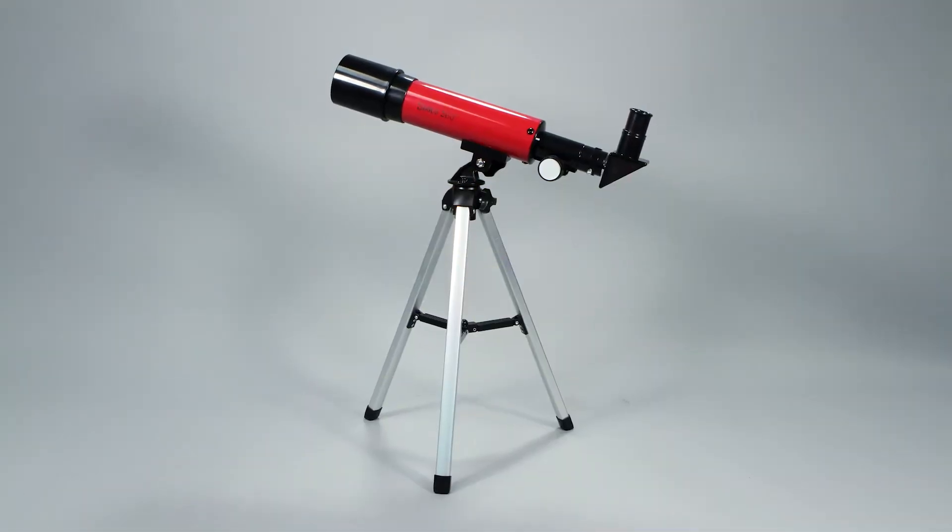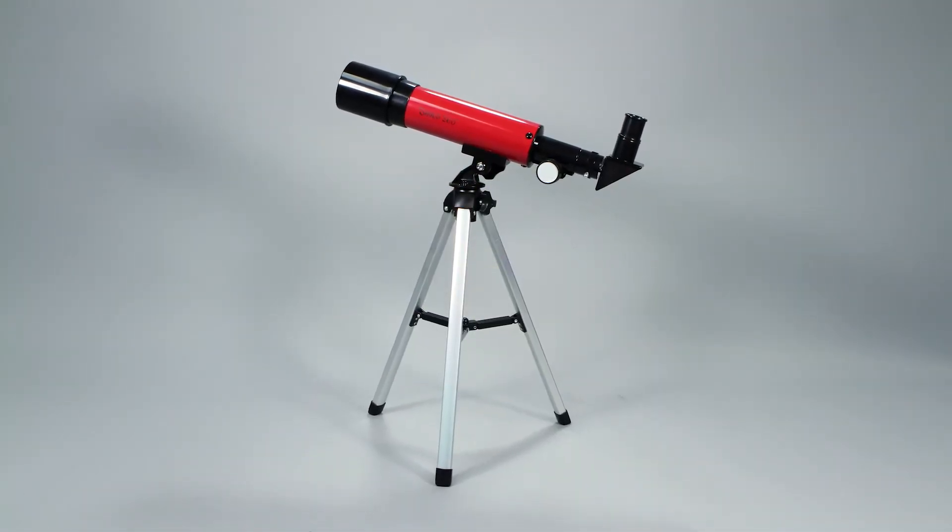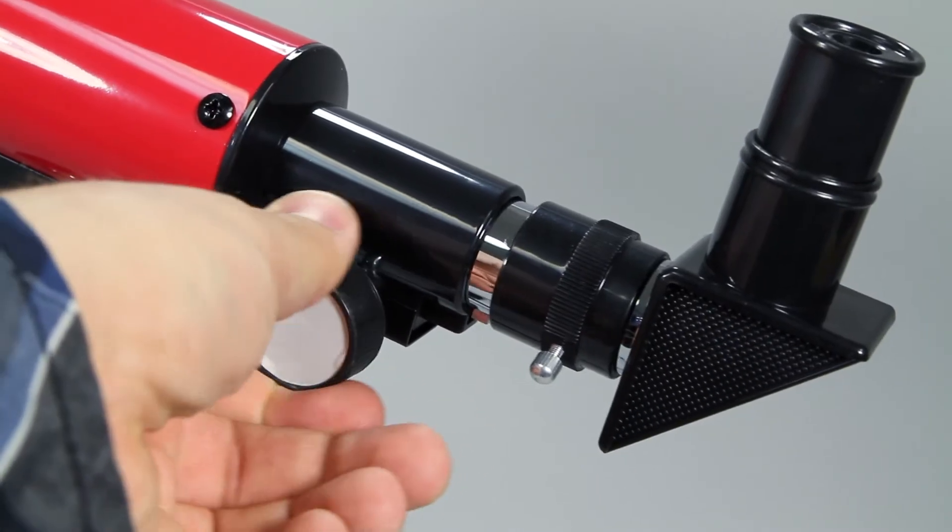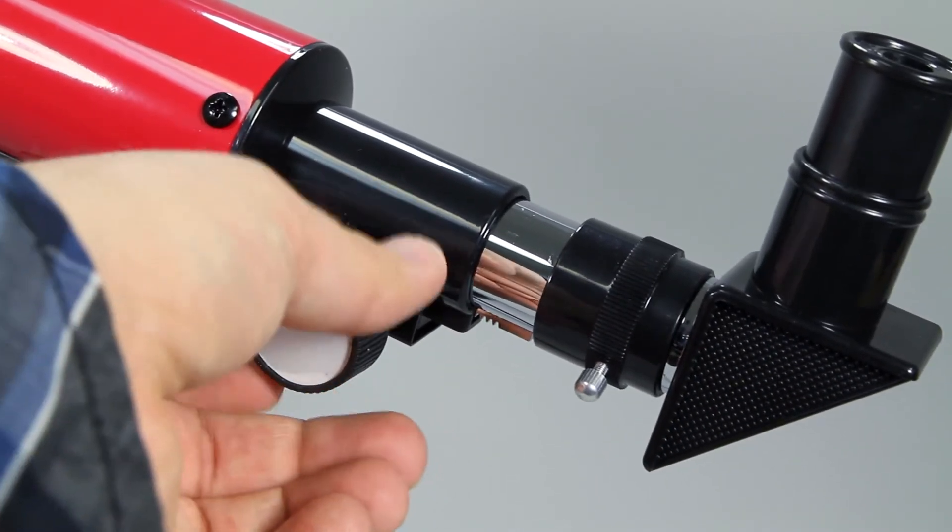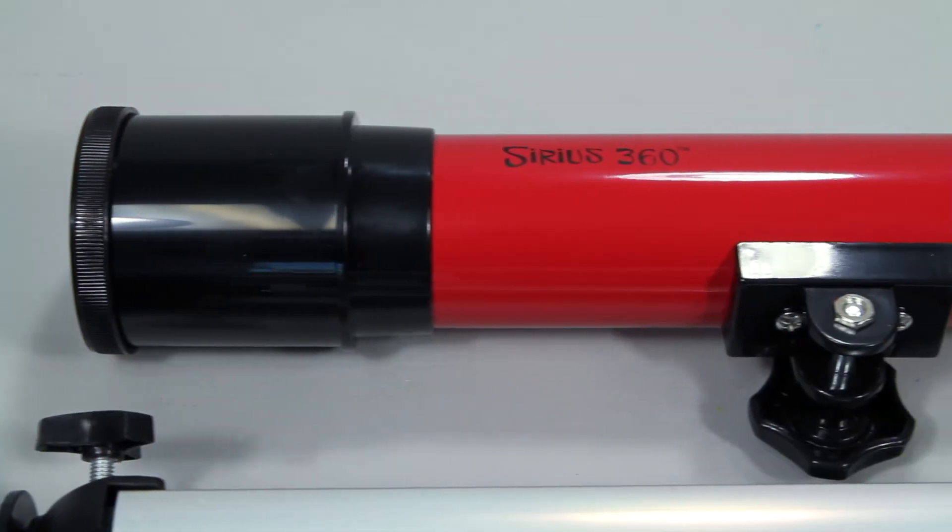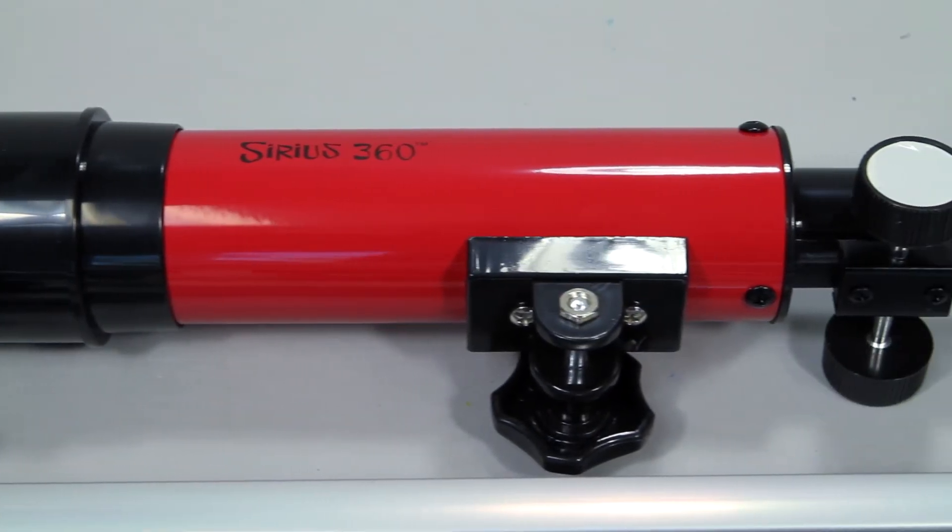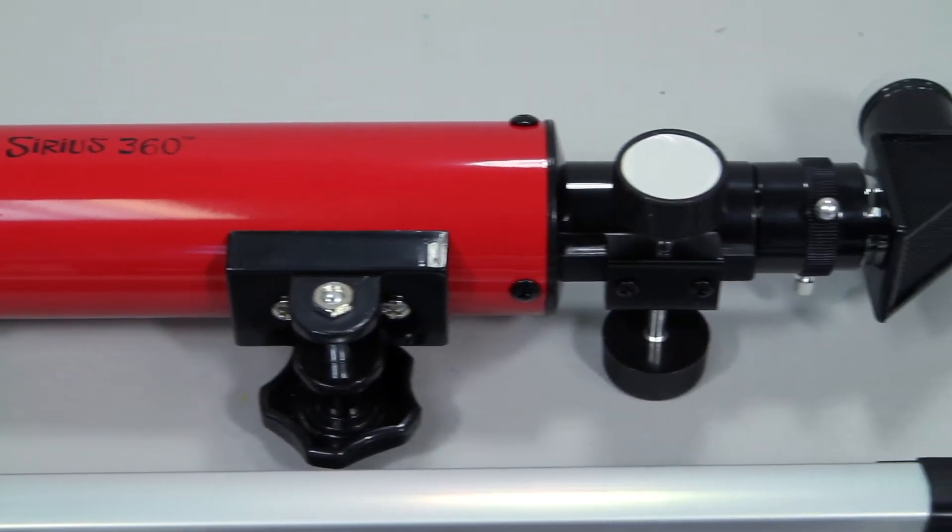The telescope comes equipped with a tripod for maximum stabilization and a focus knob to adjust focal distance. Inside the box you'll find the 90mm aluminum Sirius 360 telescope with a 360mm focal length.